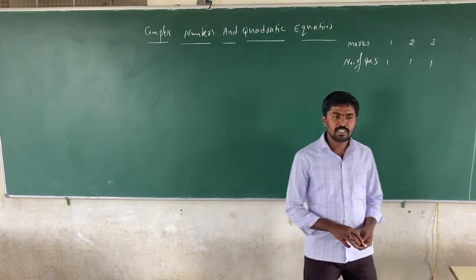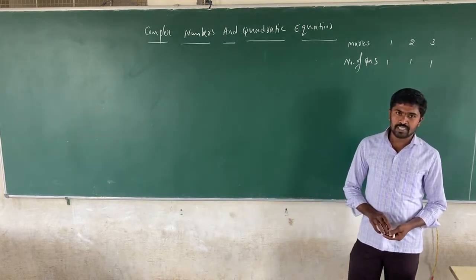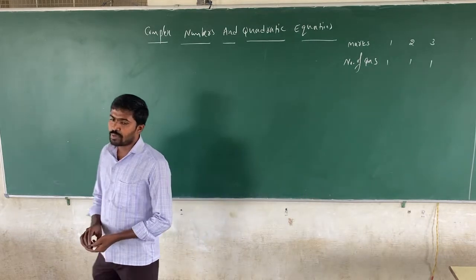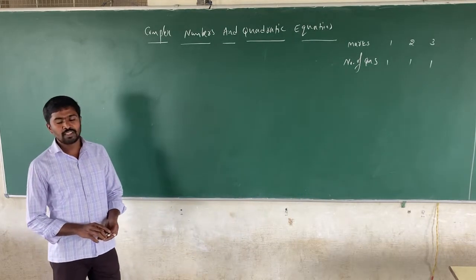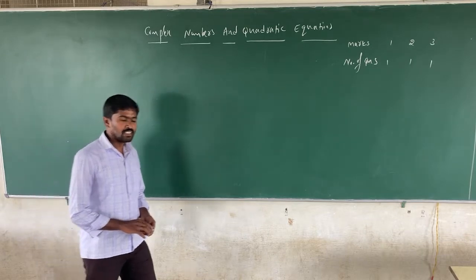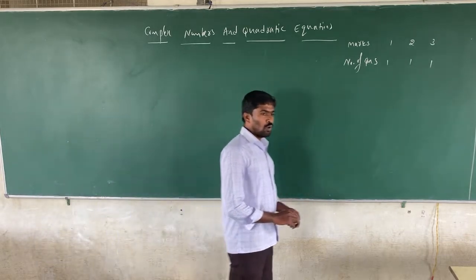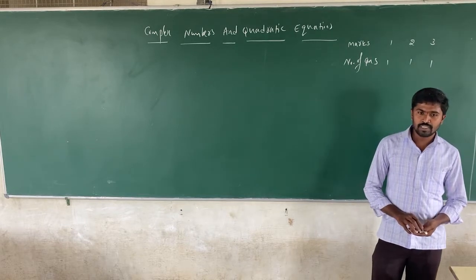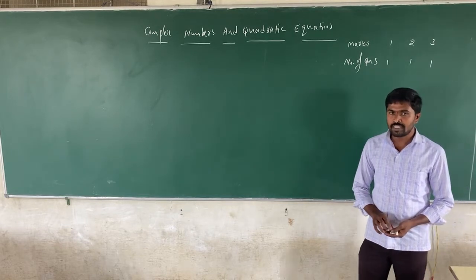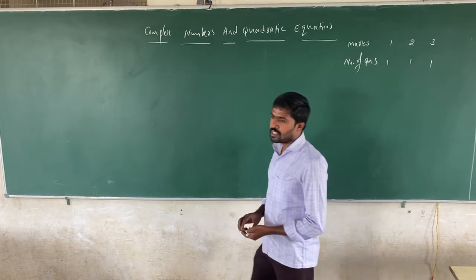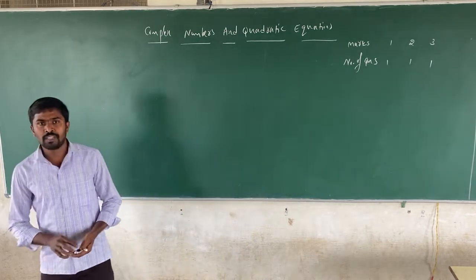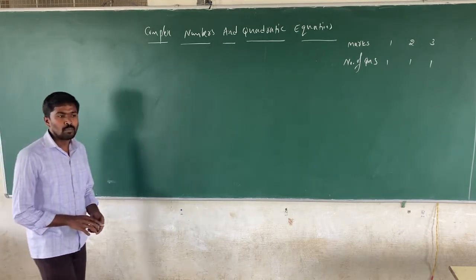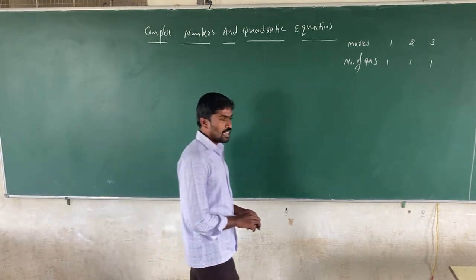The seventh one is Permutations and Combinations, the eighth one is Sequences and Series, the ninth one is Binomial Theorem, the tenth one is Straight Lines, the eleventh one is Conic Sections, the twelfth one is Three Dimensional Geometry, the thirteenth one is Limits and Derivatives, the fourteenth one is Mathematical Reasoning, the fifteenth one is Statistics, and the sixteenth one is Probability.